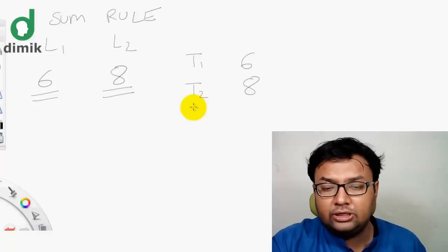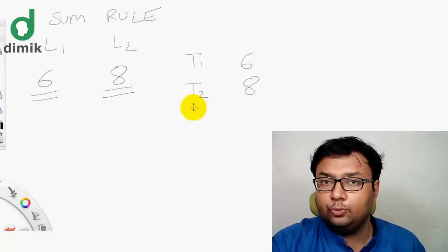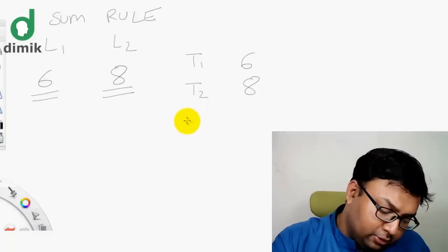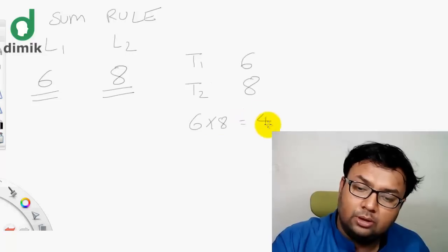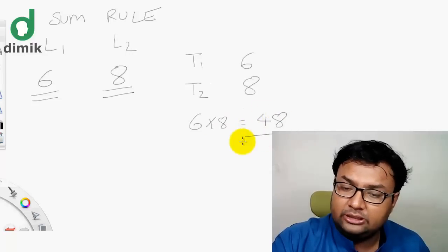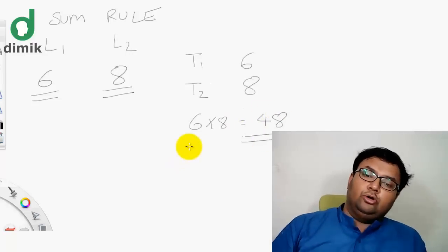If you have two tasks that are independent, then the answer is 6 times 8. This is the product rule application.